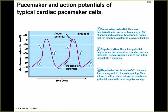Number one is the pacemaker potential. The resting membrane potential here is a little bit higher than what we see for nervous system cells. The pacemaker potential is a slow depolarization — you never see the membrane potential as a flat line. You're starting to see a positive change happening here.